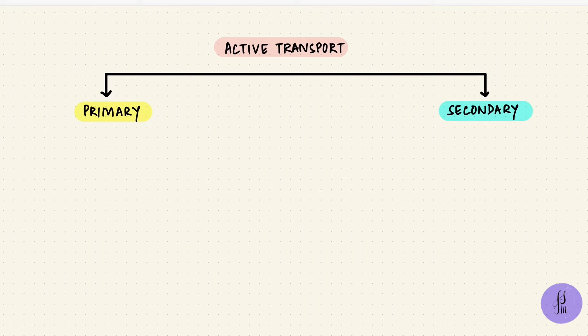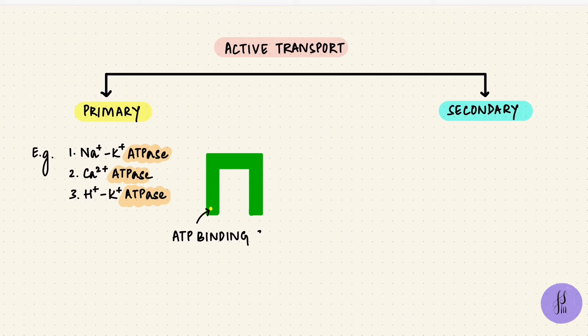There are three classic examples for primary active transport: the sodium potassium ATPase, the calcium ATPase, and the proton potassium ATPase. ATPase, these are enzymes. So these pumps are enzymes that hydrolyze ATP when it binds. ATP by the ATPase undergoes hydrolysis to form adenosine diphosphate, that's ADP, and an inorganic phosphate. That's a high energy phosphate bond, so energy is released. The phosphate gets transferred to the carrier protein, so it gets phosphorylated, and that's followed by a conformational change.